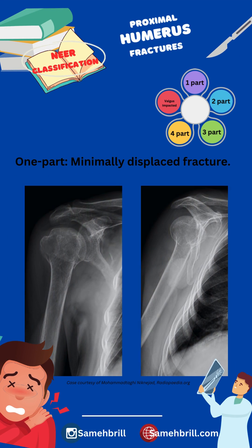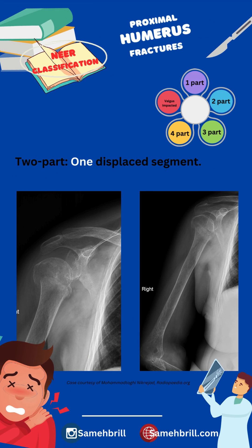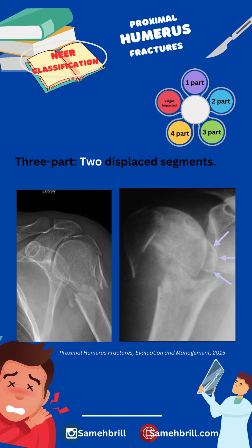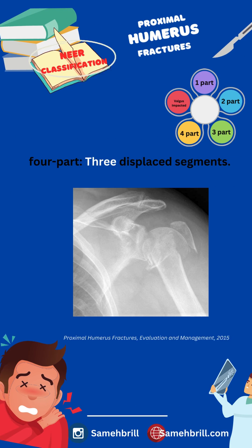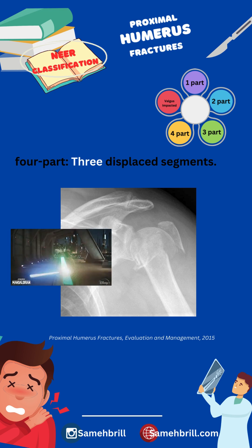A one part fracture is a minimally displaced fracture. A two part fracture has one displaced segment. A three part fracture has two displaced segments. A four part fracture has three displaced segments with respect to the fourth.